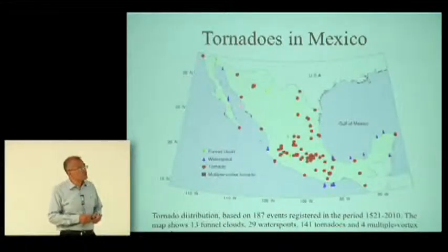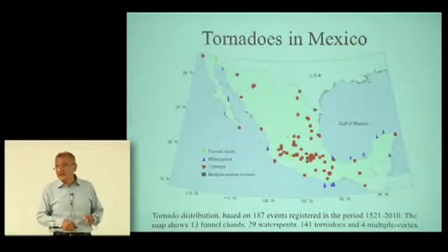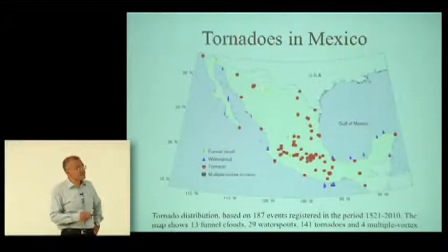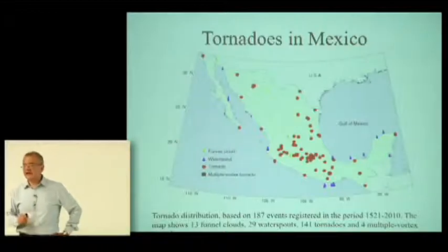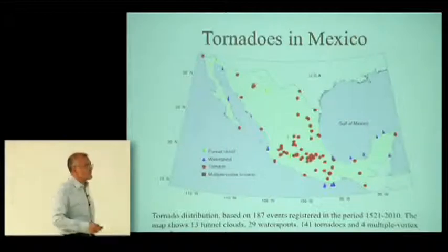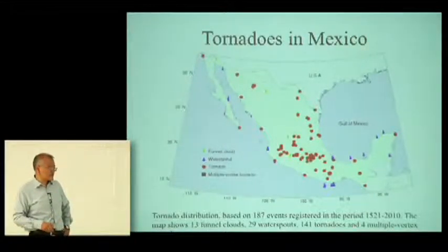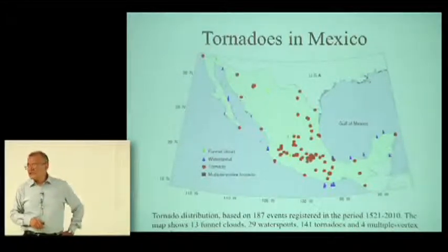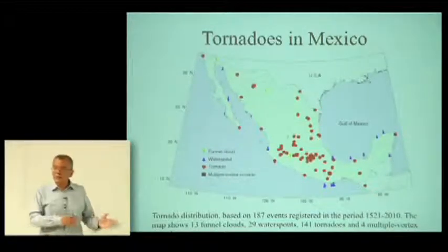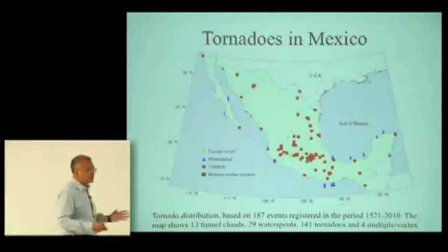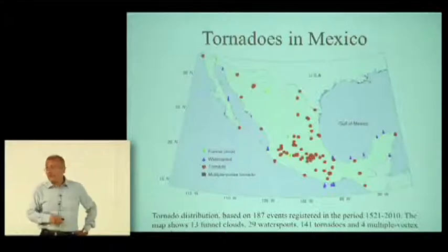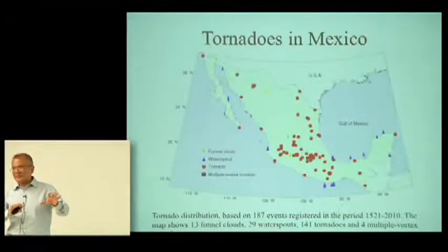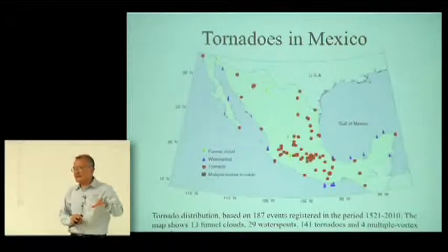This is what I've been able to compile so far: tornadoes in Mexico. I have been able to identify 185 events, distributed across this region. I have funnel clouds — when I have not been able to confirm that the vortex made contact with the surface — for just a few events; about 13 waterspouts, which in the United States are not usually compiled together with tornadoes but in Europe they are. Tornadoes are shown in red, and you can see the concentration in the central region — which could be due to topography or simply due to the fact that people live there and are there to witness them.